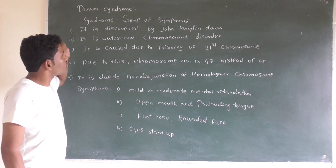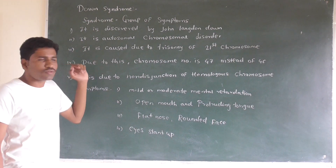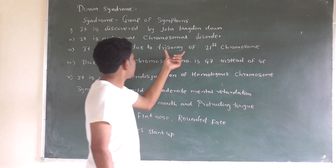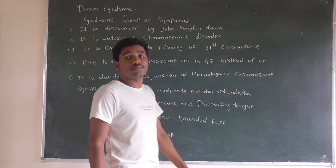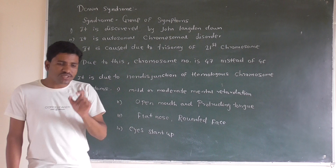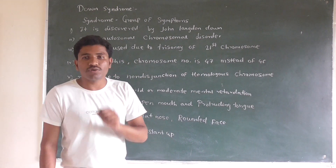So what is actually Down syndrome? In Down syndrome there is a trisomy of the 21st chromosome. In the 21st chromosome there are three copies instead of the normal two.